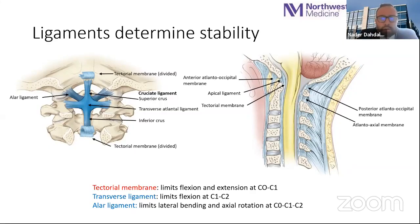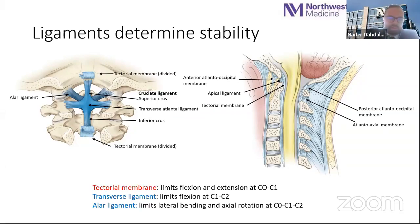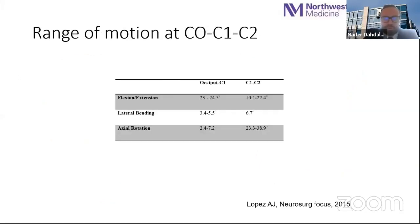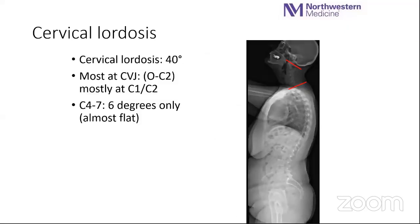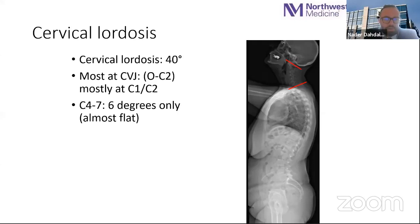The first layer contains the atlanto-occipital membrane. The second layer contains the apical ligament in the middle and the alar ligaments on the sides, spanning the dens to the medial aspect of the occipital condyles. The third layer is the cruciate ligament with its transverse atlantal and superior-inferior crus components. The fourth layer is the tectorial membrane — a continuation of the PLL. Most relevant are the alar ligaments, which limit lateral bending and axial rotation, and the transverse ligament, which limits flexion.